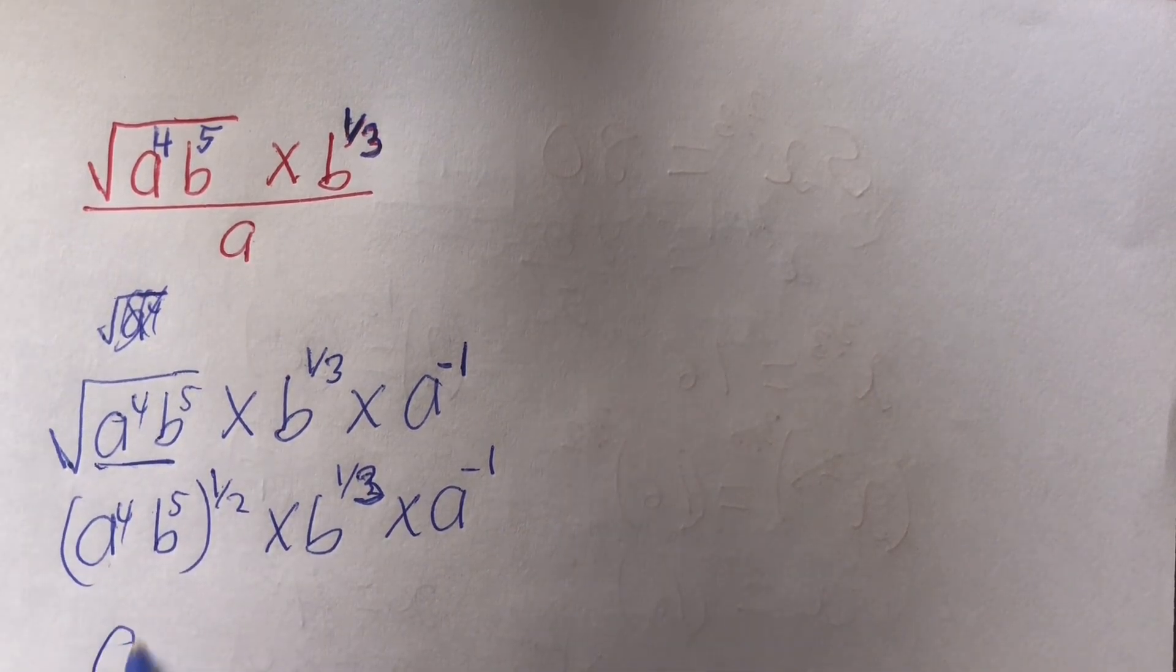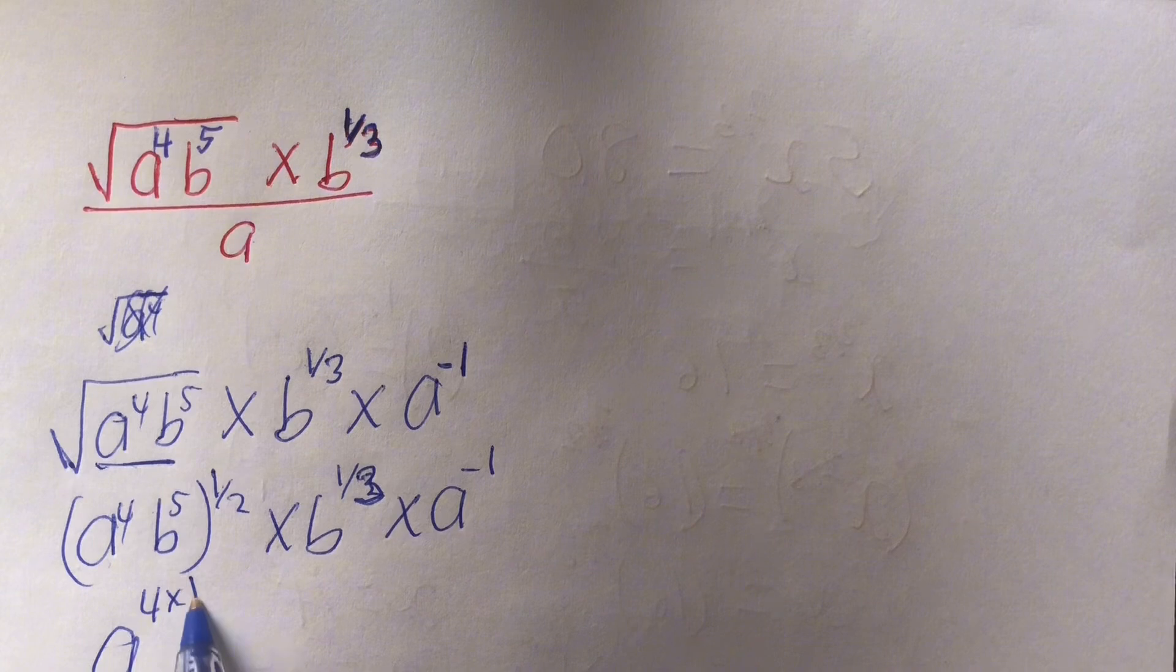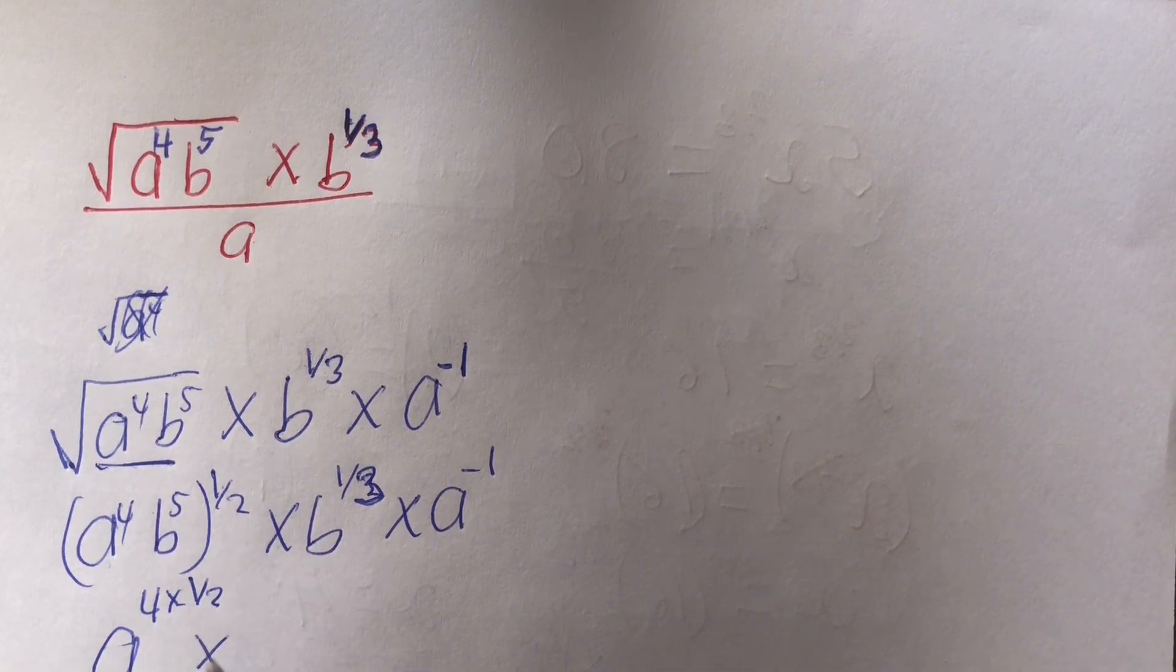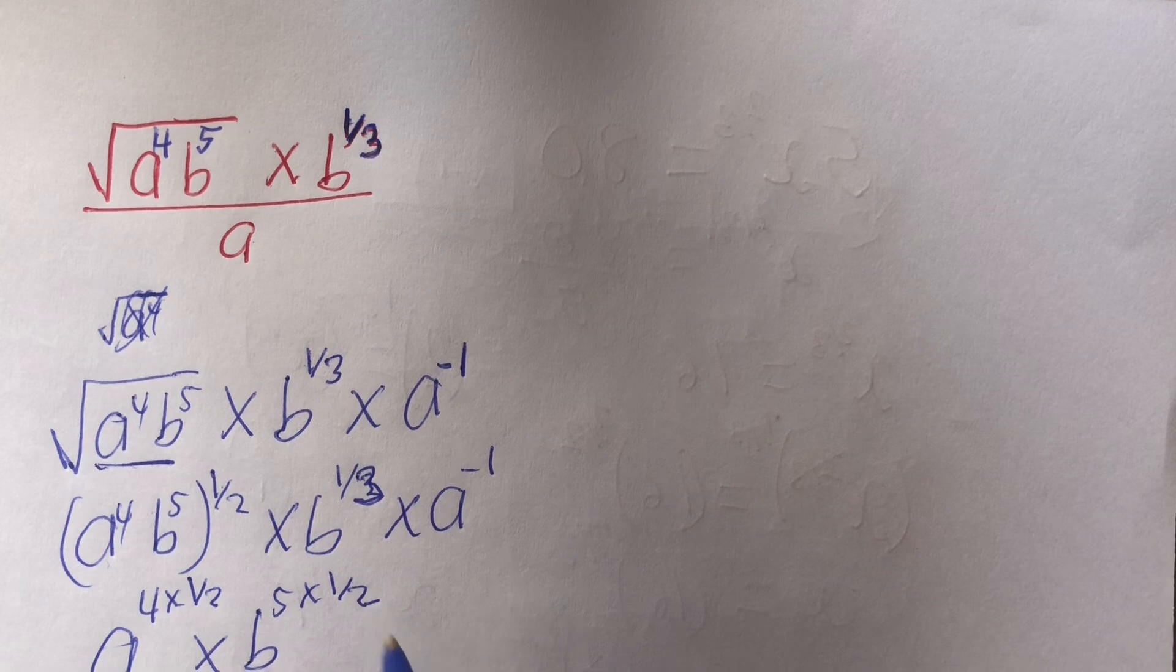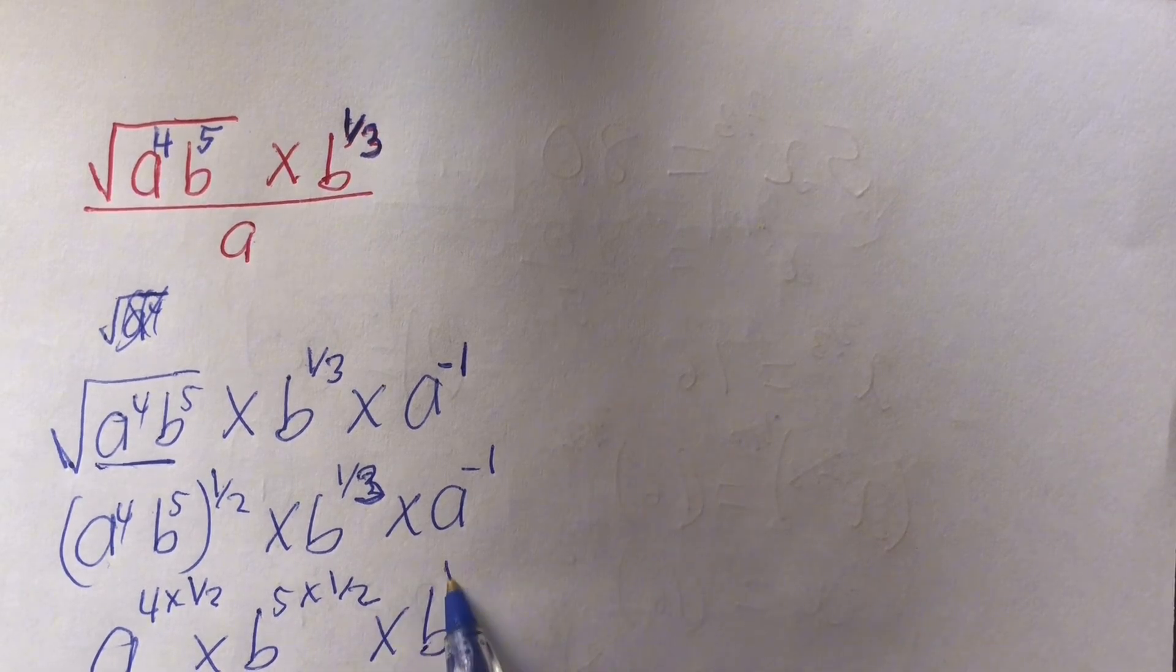So this will be written as a power 4, times b power 5, times half, times b power 1 out of 3, times a power negative 1.